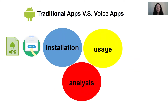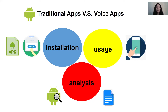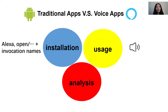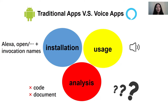For traditional applications, we take Android apps as examples. Users download an APK file from a market and install it on their phone, then interact with the application by touching and clicking on the mobile phone. To analyze an Android app, there are many methods, such as static or dynamic analysis with the code or document. For voice apps, we take Amazon skills as examples. Users do not need to install skills on smart speakers. Instead, they can use a combination of phrases and the invocation name to automatically enable a skill. Users interact with skills mainly through voice commands. As for analysis, the code or document is not available for skills. Therefore, the analysis methods of traditional applications cannot be used for skills.